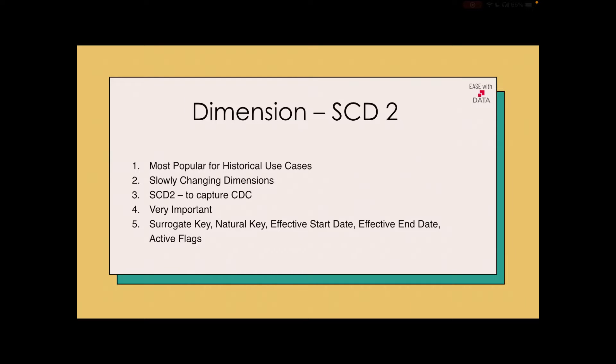There are a few terms which are very important for SCD type 2. Those are surrogate keys, effective start date, effective end date, and active flag. We are also using natural key in this table to identify the changed records. As a part of SCD type 2, we basically deal with few terms: first one is the surrogate key, second one is effective start date, third one is effective end date, and the final one is active flag.